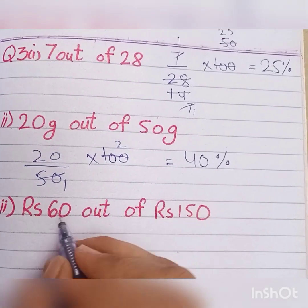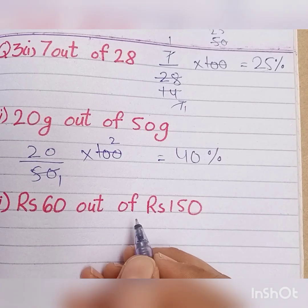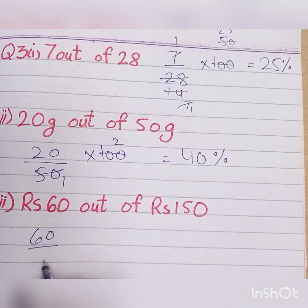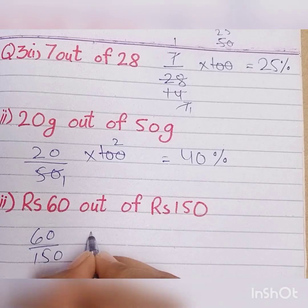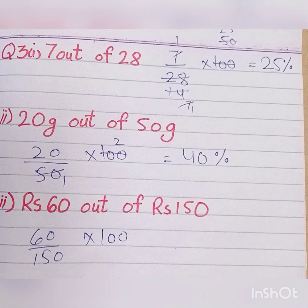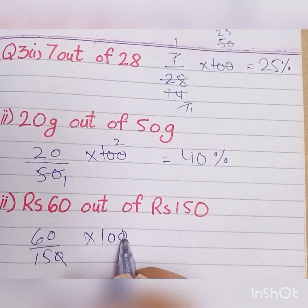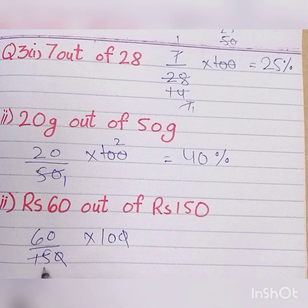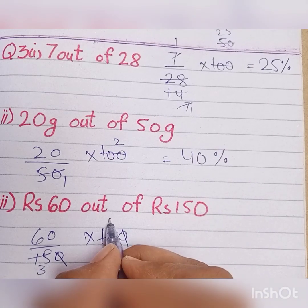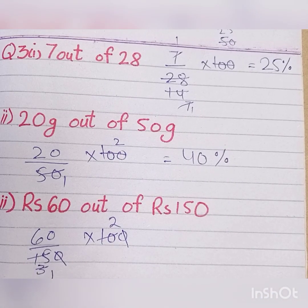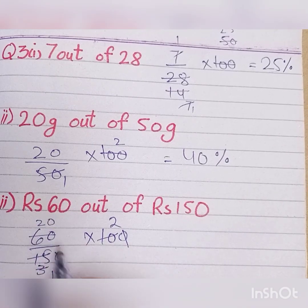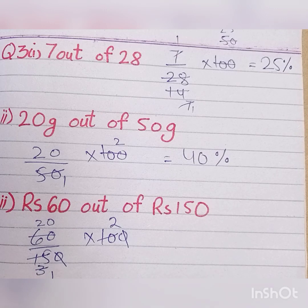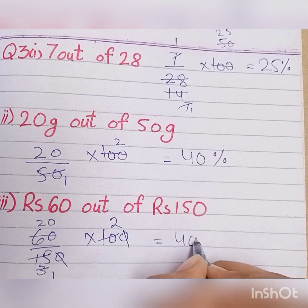Next, we have 60 out of 150 multiplied by 100. We cancel zeros — one zero from 100 and one zero from 150, leaving 15 and 10. Using the 5 times table, 15 gives 3 and 10 gives 2. Then 3 table: 60 divided gives 20, and 20 multiplied by 2 gives 40. So the answer is 40 percent.